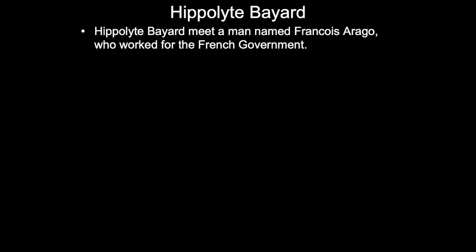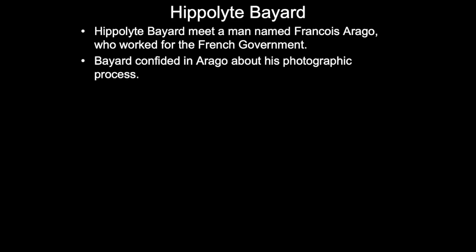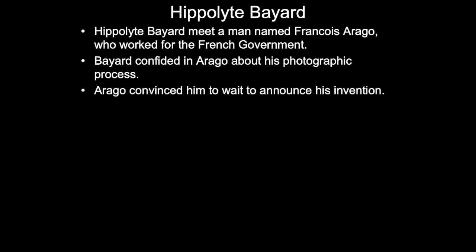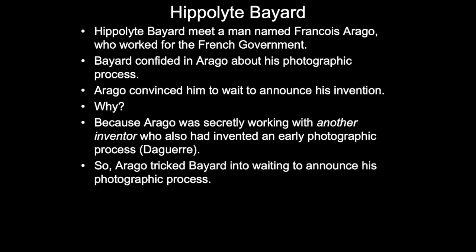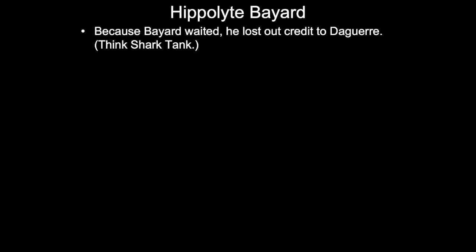Hippolyte Bayard met a man named François Arago, who worked for the French government. Bayard confided in Arago about his photographic process, and Arago convinced him to wait to announce his invention. Why? Because Arago was secretly working with another inventor who had also invented an early photographic process — named Daguerre. So Arago tricked Bayard into waiting, and because Bayard waited, he lost credit to Daguerre.